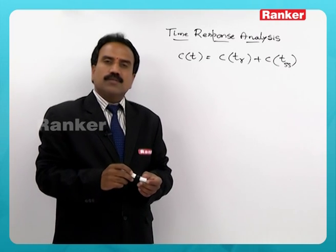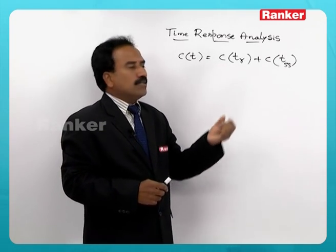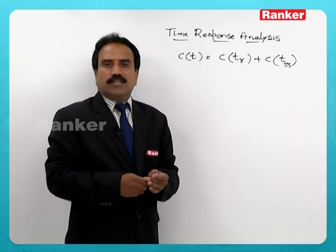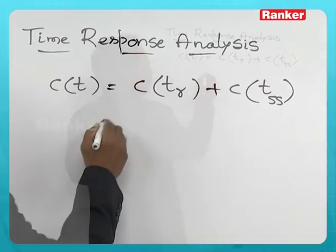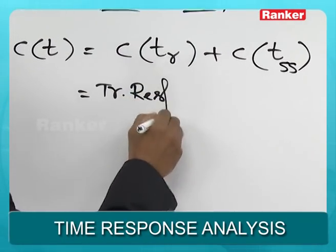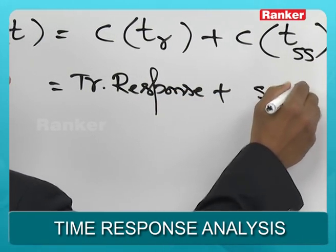Time response mainly consists of two parameters: response in transient period and response in steady state. This is transient response plus steady state response.